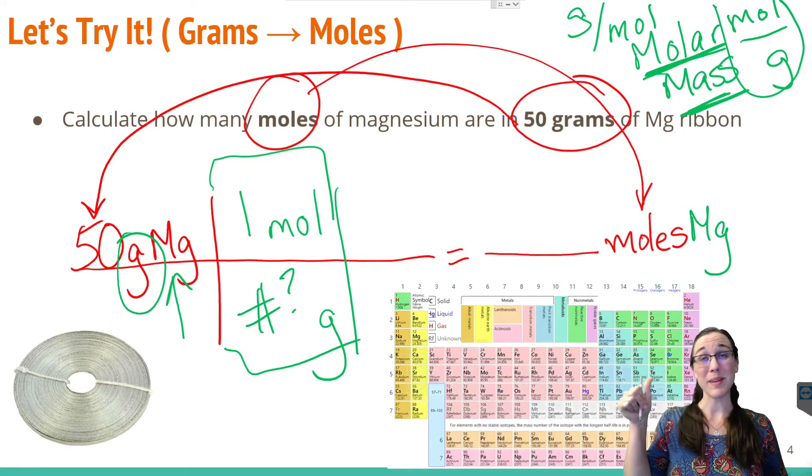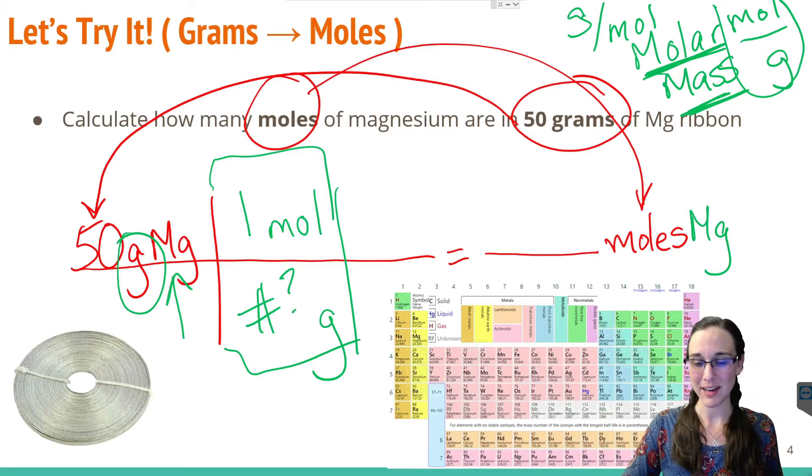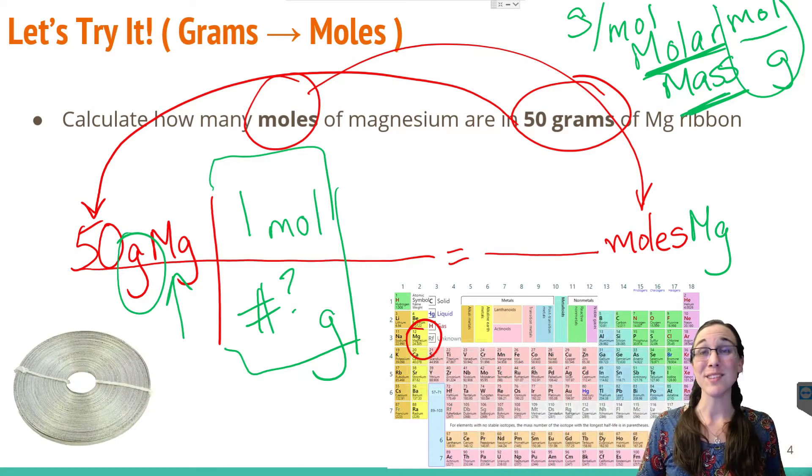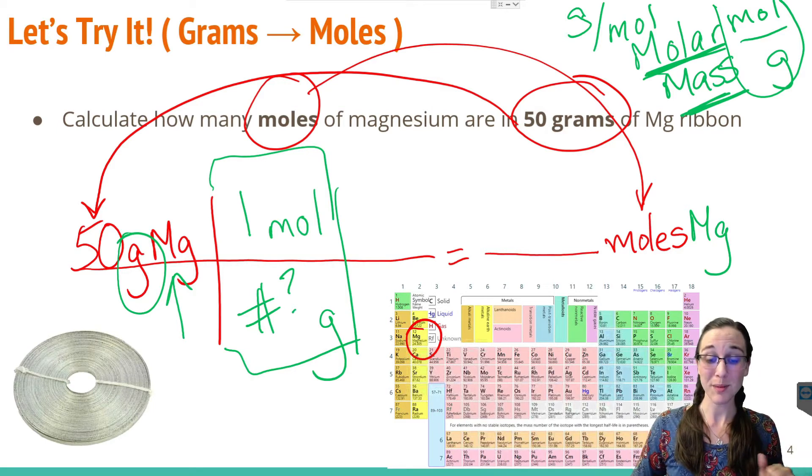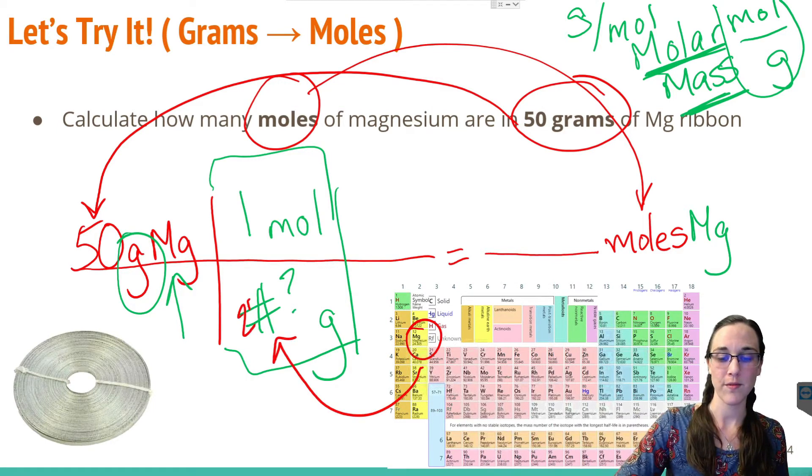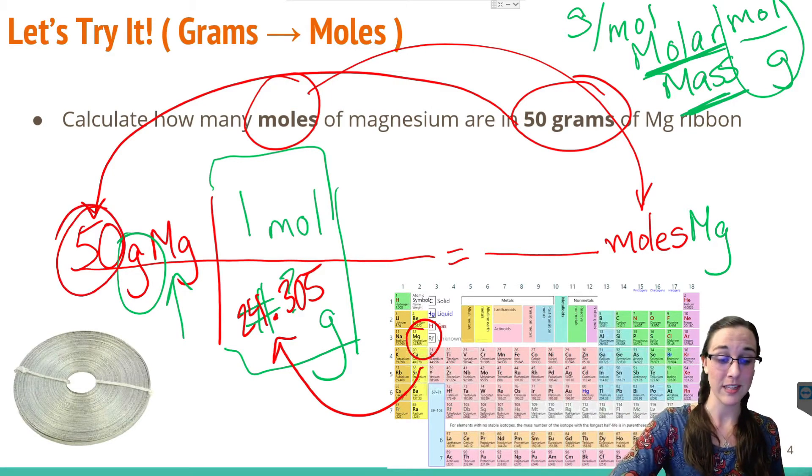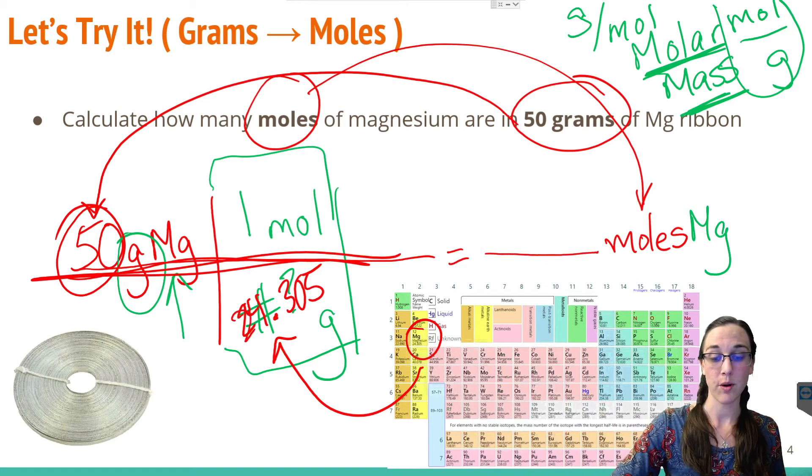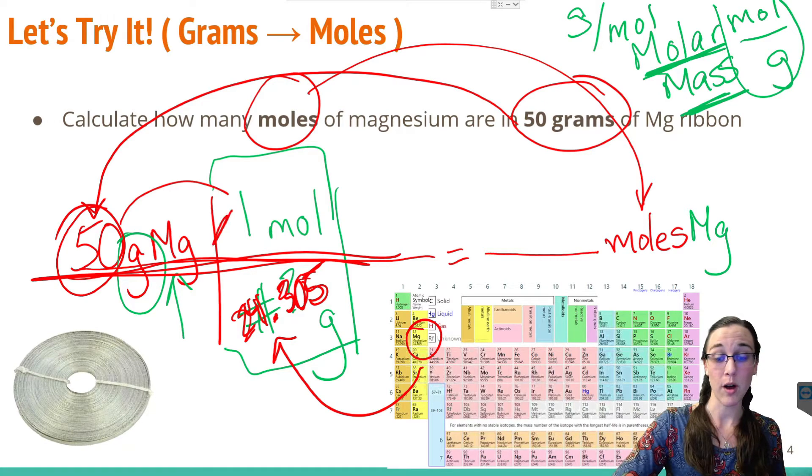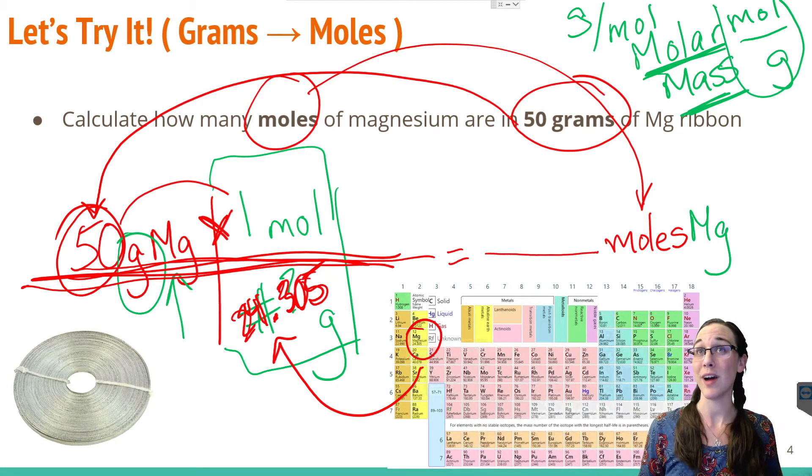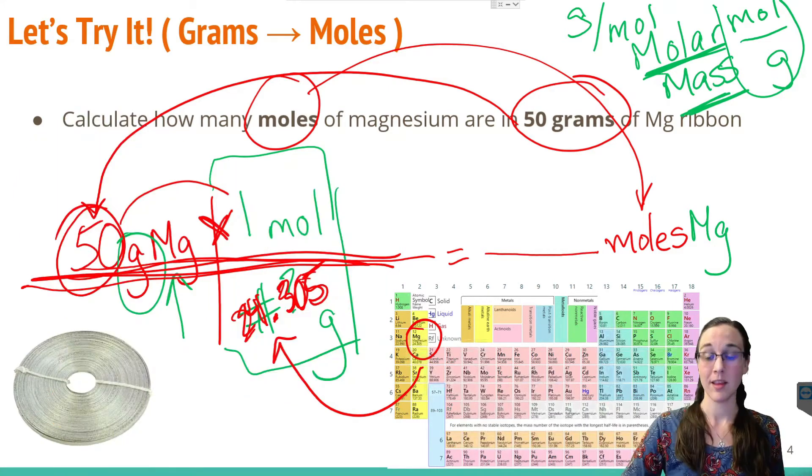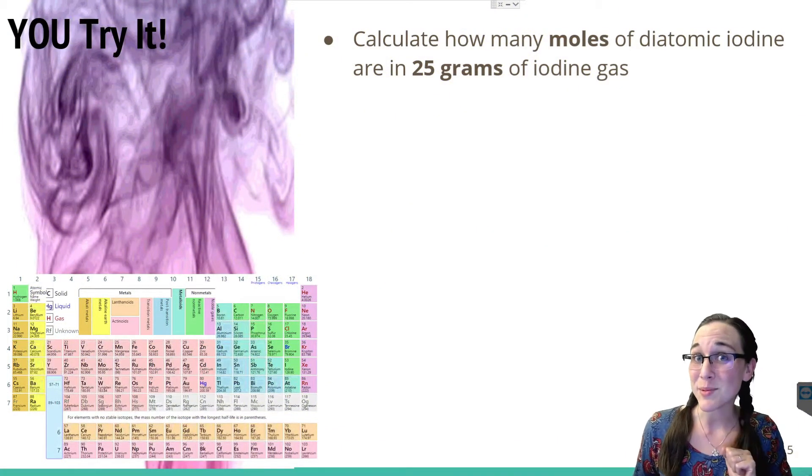All right, so now that I've got the periodic table behind me, let's look for magnesium. Magnesium is right here and it has a mass of 24.305. So we're going to plug that number in right there, 24.305. Now all we have to do is take 50 divided by 24.305, or you could say 50 times 1 divided by 24.305. So grab your calculators and plug and chug. Our final answer is 2.057 moles of magnesium. Think you've got it? Go ahead and pause the video here to give this one a try.